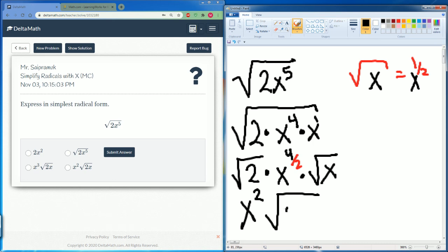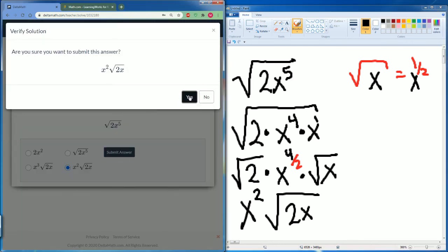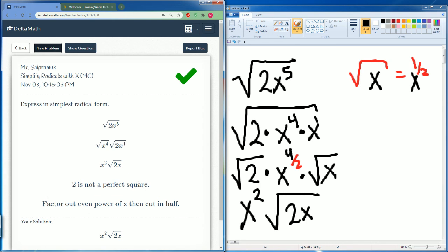Then you have left on the inside 2 and x, so here it is x to the 2 radical 2x. There you go, this is simplifying radicals with x's and they're multiple choice.